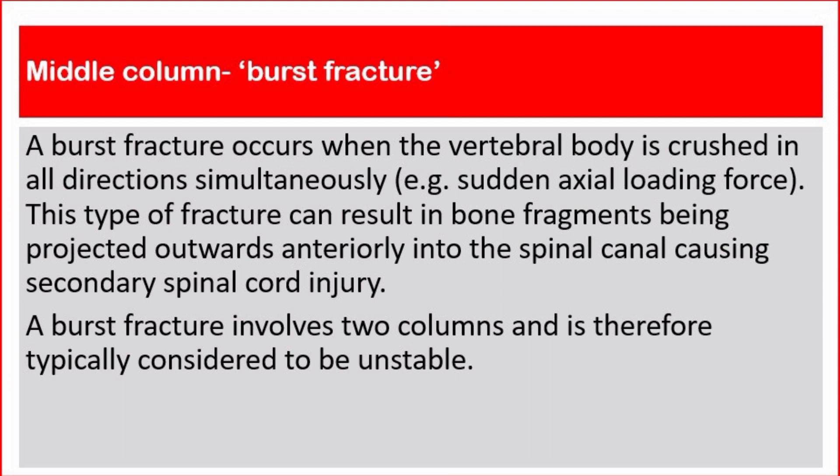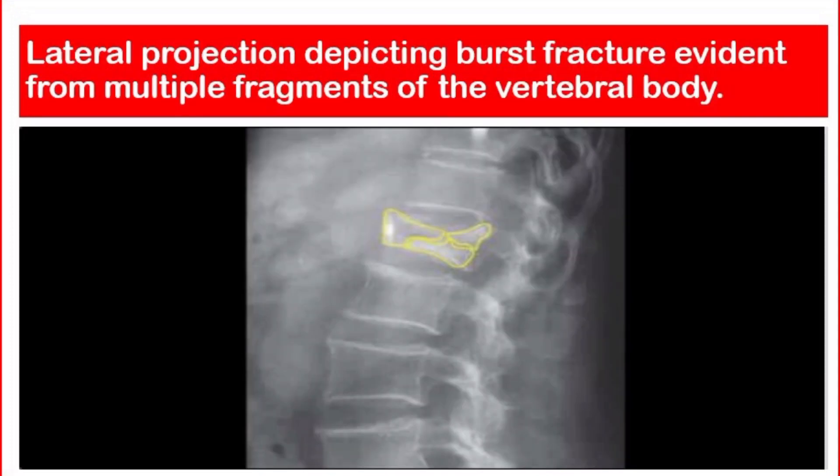Middle column — Burst fracture: A burst fracture occurs when the vertebral body is crushed in all directions simultaneously, for example by sudden axial loading force. This type of fracture can result in bone fragments being projected outwards anteriorly into the spinal canal, causing secondary spinal cord injury. A burst fracture involves two columns and is therefore typically considered to be unstable. This picture shows a lateral projection depicting a burst fracture, evident from multiple fragments of the vertebral body.